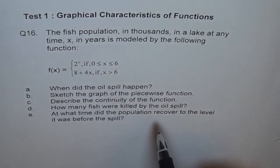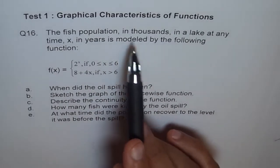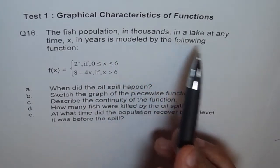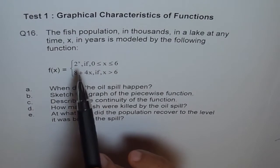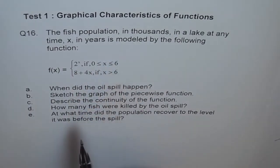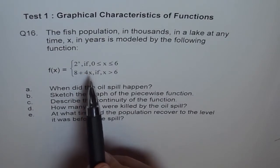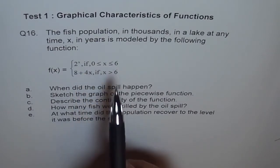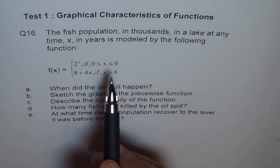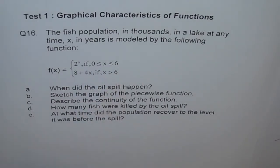In a lake at any time x in years, x is in years, is modeled by this function. So it is 2 to the power of x if x is between 0 and 6. What we can do here is we can find the population when it was 0 and population when it was 6.